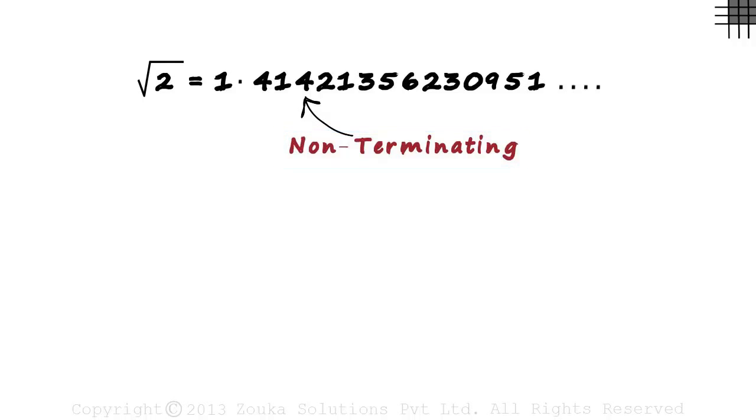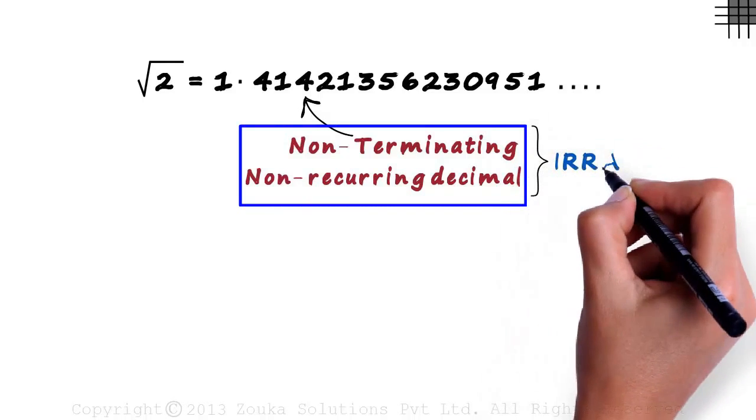Also, you will not find any pattern in the digits after the decimal. Hence, it is also called a non-recurring decimal. There is no pattern that occurs again and again. These kinds of numbers are called irrational numbers.